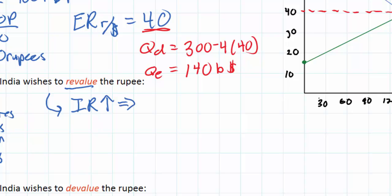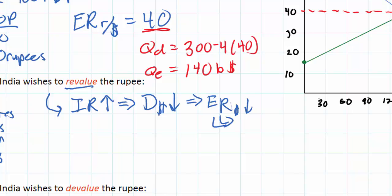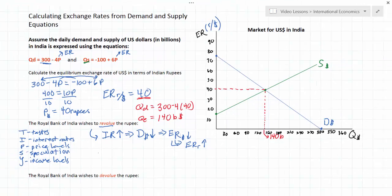Higher interest rates in India would cause Indian investors to demand fewer US dollars, because they would demand fewer investments in American assets due to the now relatively lower interest rate on US investments. Therefore, the demand for US dollars in India would decrease, causing the dollar to depreciate — the exchange rate of the dollar would fall — and this would lead to an increase in the exchange rate of the rupee. The rupee would be revalued or appreciate. How would this look in our demand and supply model?